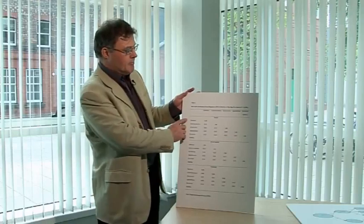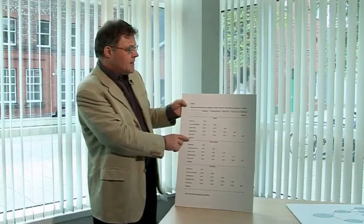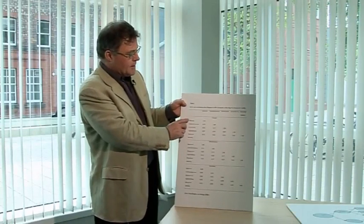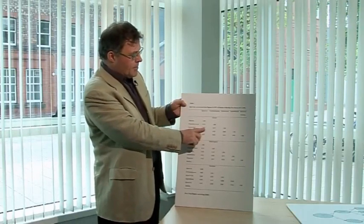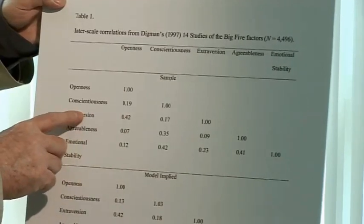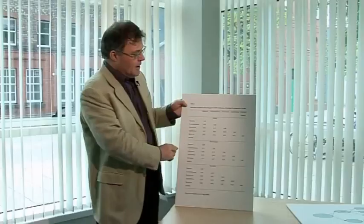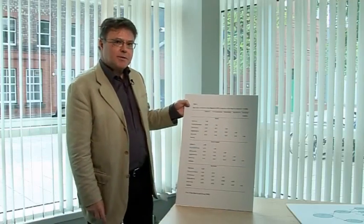We basically start off with a set of data that looks like this. This contains the correlations between the different factors of personality. So for example, this figure 0.42 represents the correlation between extraversion and openness. All of these figures are correlations, and correlations basically can go from zero to one, exactly in the same way as the factor loadings.